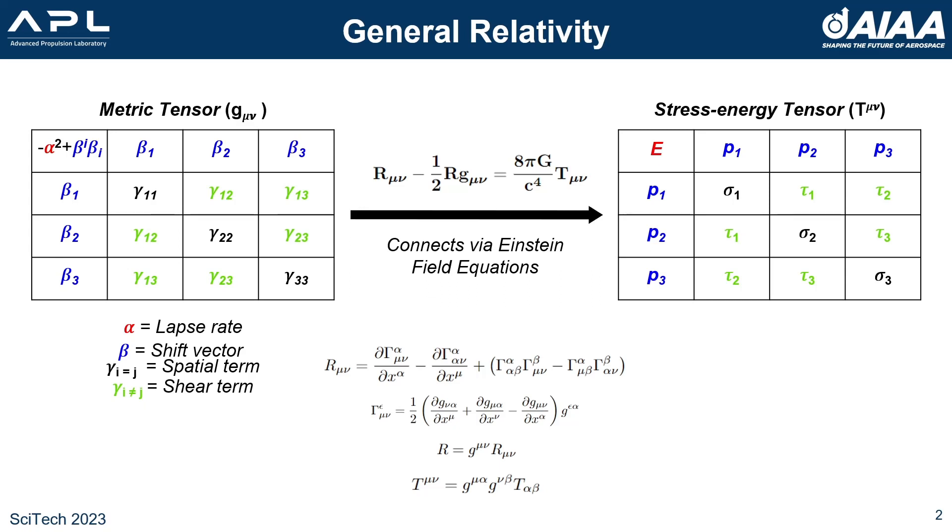Through the Einstein field equations, the metric is turned into the stress energy tensor, which is also a 4x4 symmetric matrix. The top left component describes the energy density present in space. The upper row is the momentum densities, which describe how the energy density flows, and the other terms describe the pressure and shear stresses.